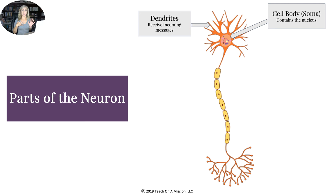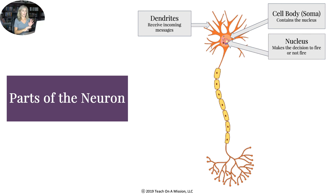Dendrites receive incoming messages from other neurons and send that message to the soma, or cell body, which contains your nucleus. Think of the nucleus like your heart — it's what makes decisions. It decides whether or not to fire the message.